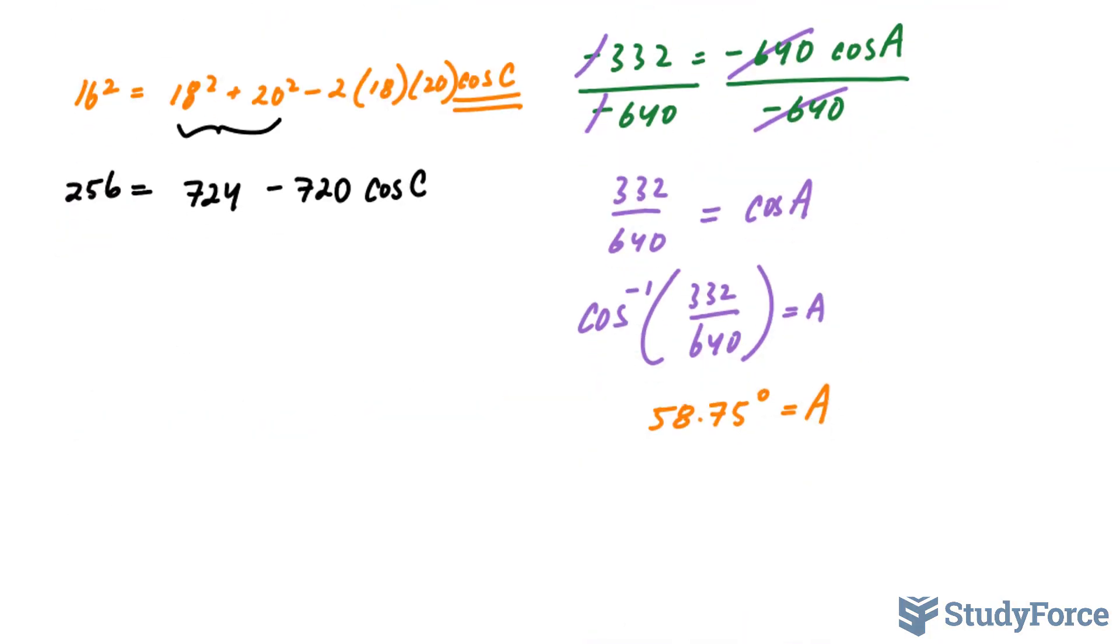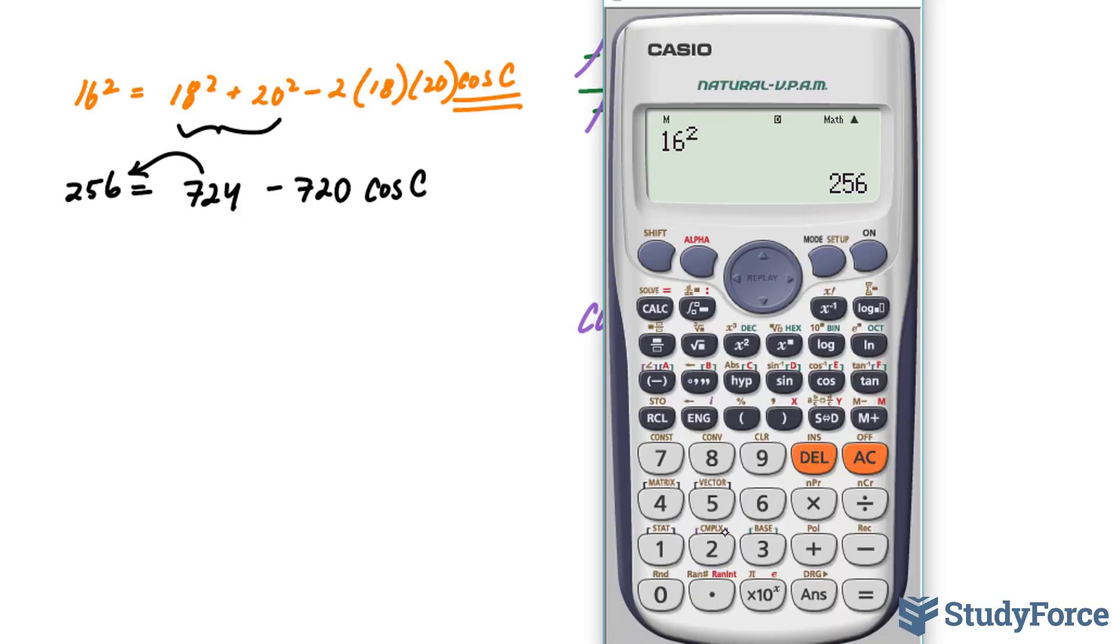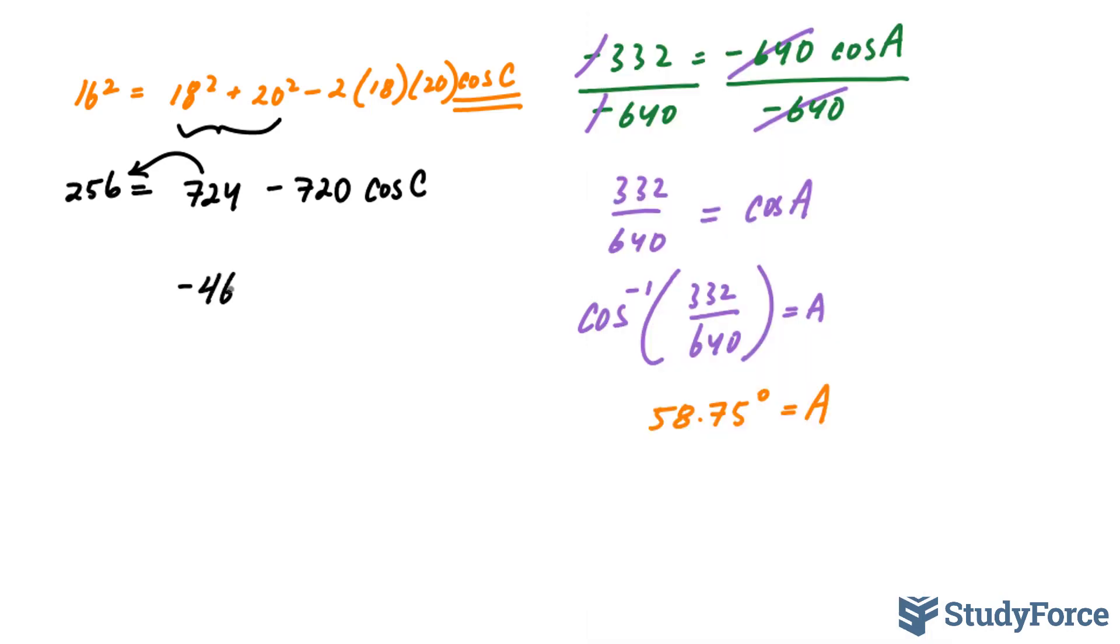And as we did before, the next step is to bring this over. If I do that, 256 - 724 gives me -468. And that's equal to -720 cos C.